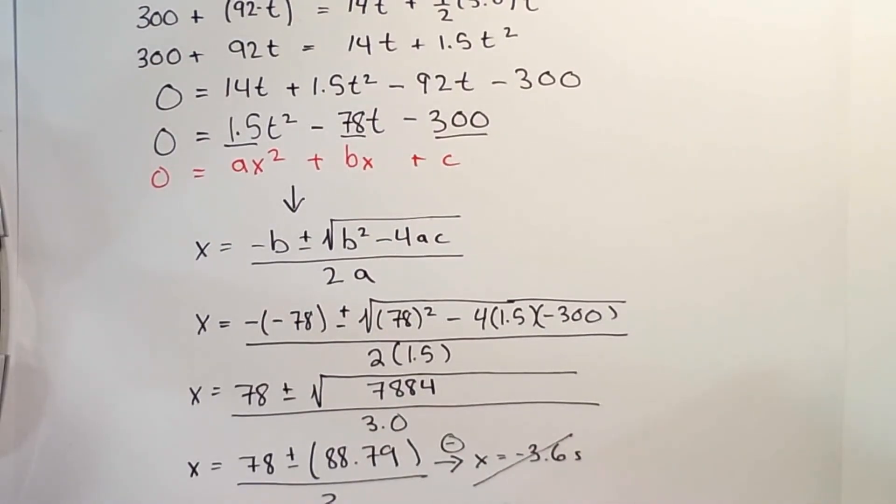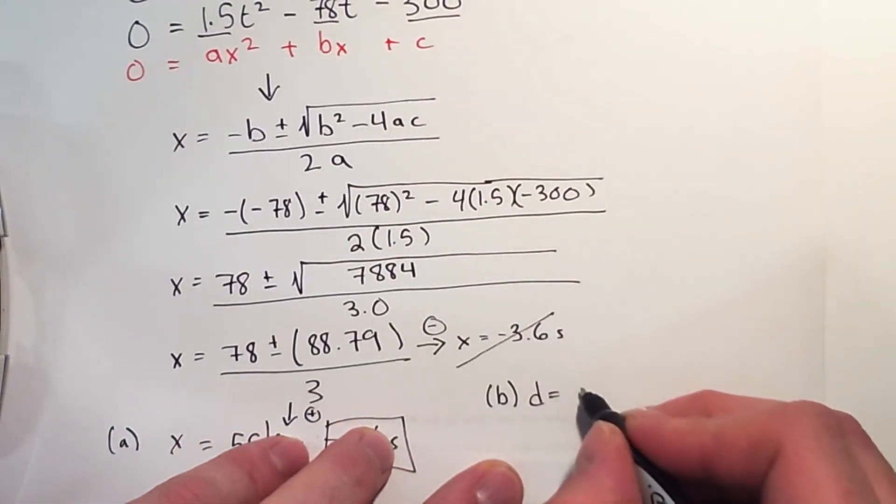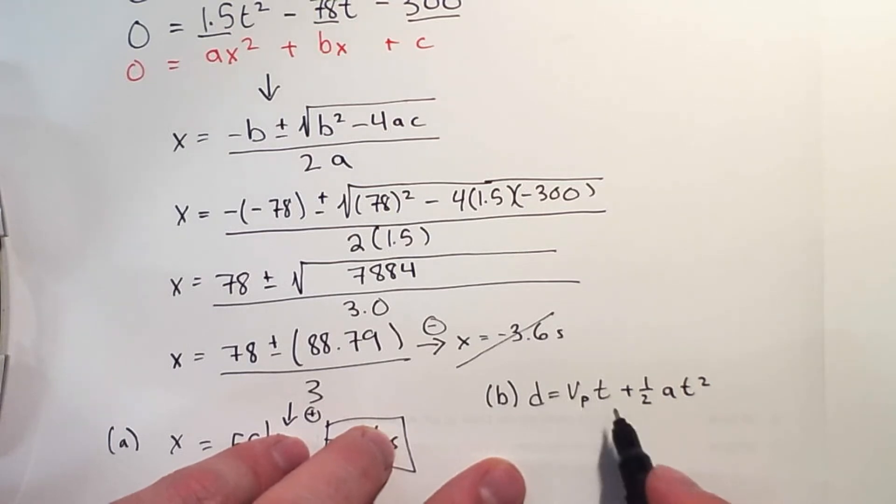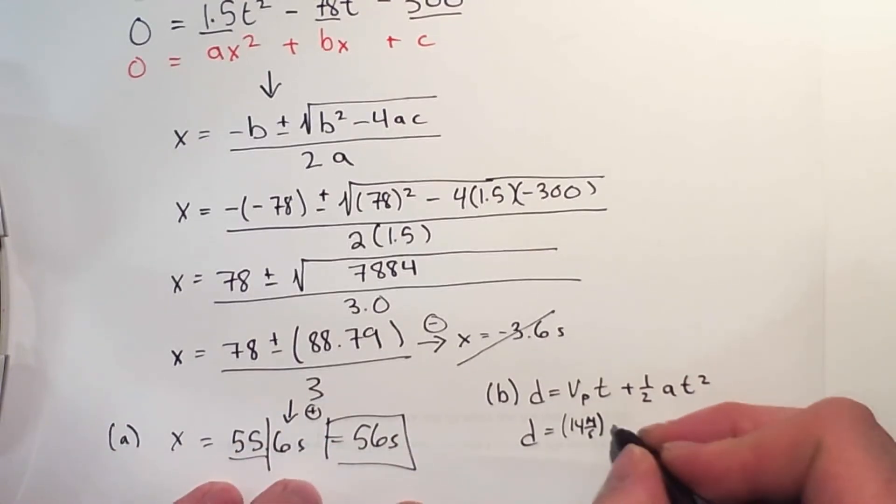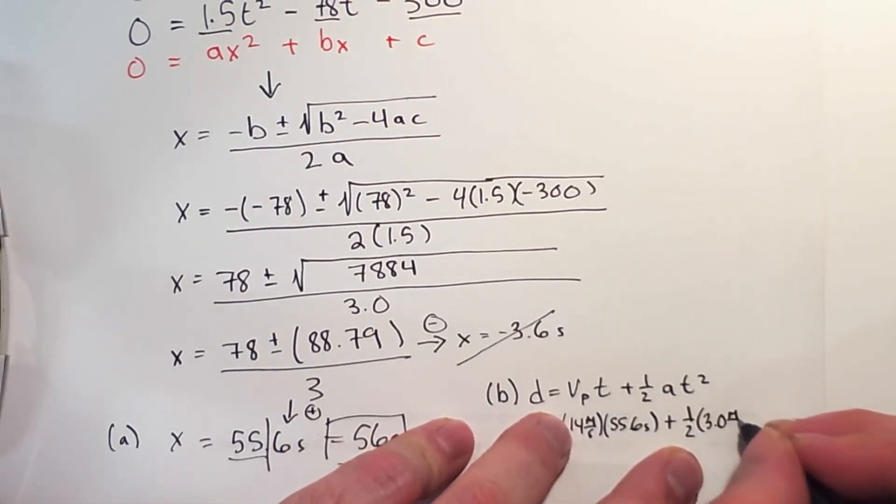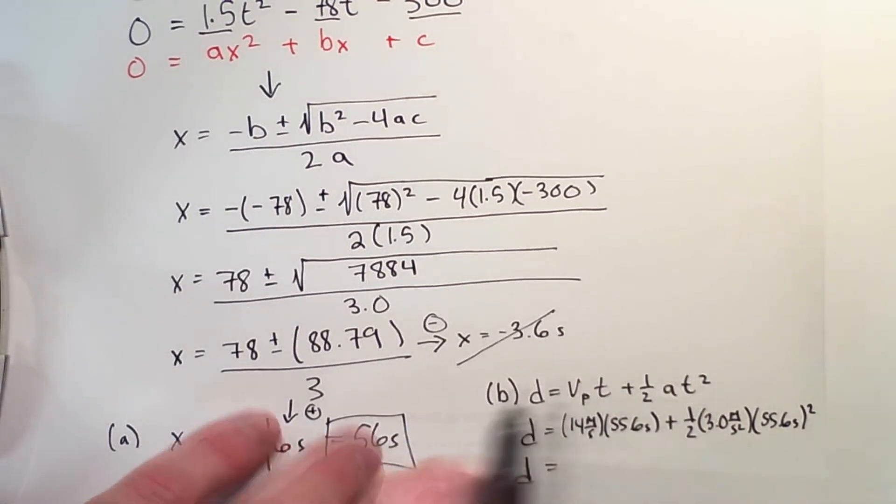So for question B, the police car was accelerating. So distance is equal to VPt plus 1 half At squared, where this is really the initial. We're just going to solve for distance. The velocity of the police car was 14 meters per second. I now have a time. Just use this equation. We're basically just solving for one half of it.